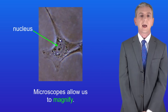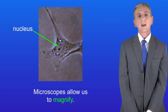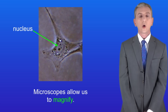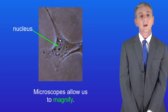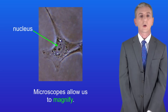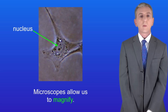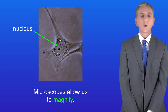Over the years light microscopes have been used a lot to study cells. They've allowed us to make important discoveries about the structures inside cells, for example the nucleus, and that's because microscopes allow us to magnify — in other words the image that they produce is much bigger than the actual object. Now there are a couple of problems with light microscopes and we can see them with this cell.